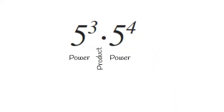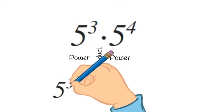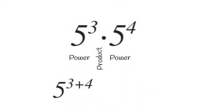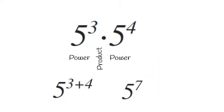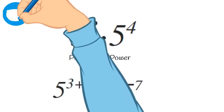So this is a product of powers. When you have a product of powers, if they have the same base, you just add the exponents. So in this case, we get 5 to the 7th, because 3 plus 4 is 7.